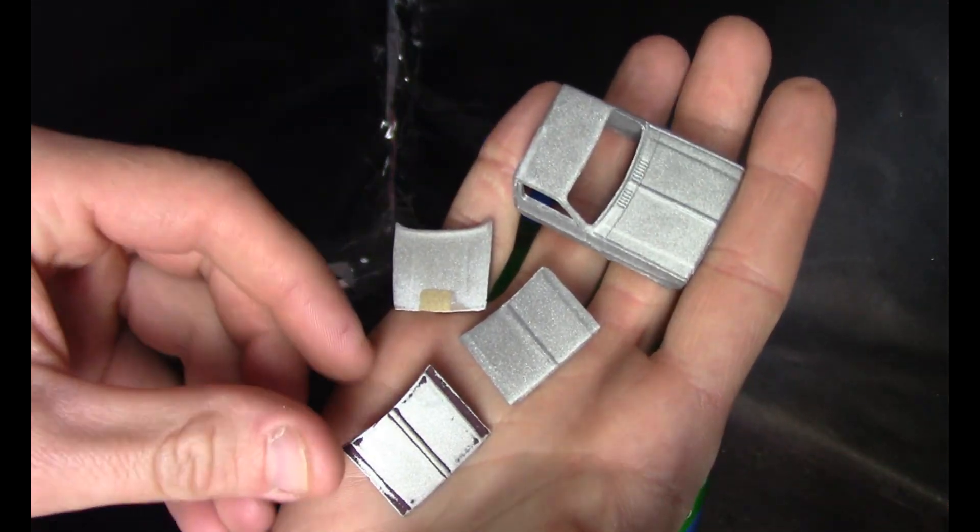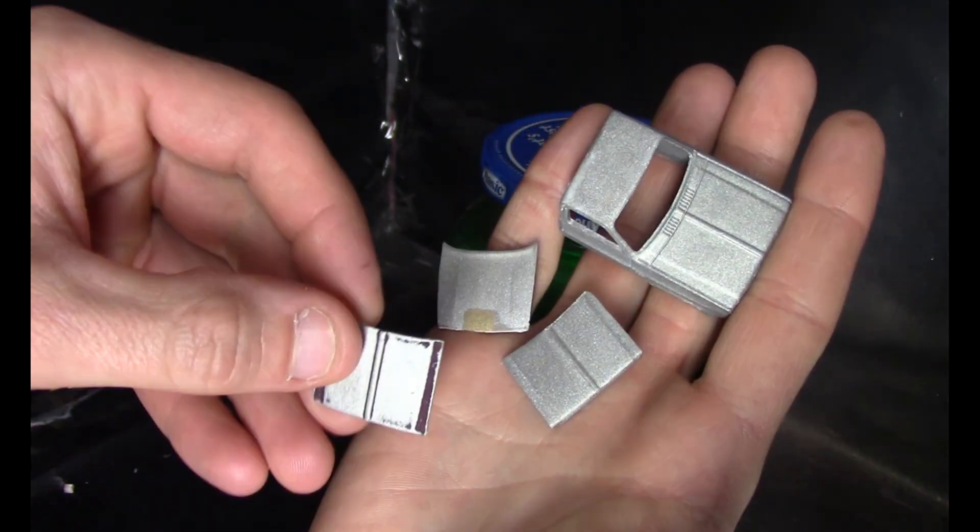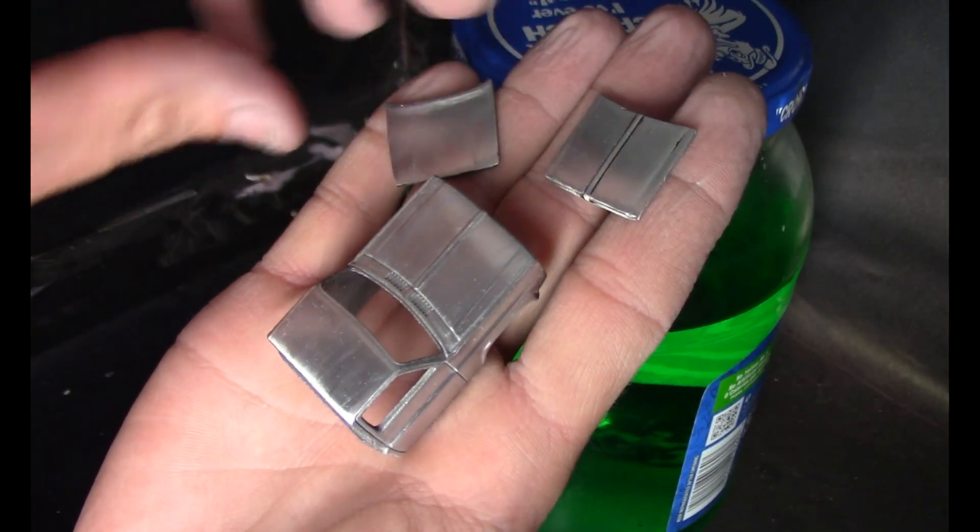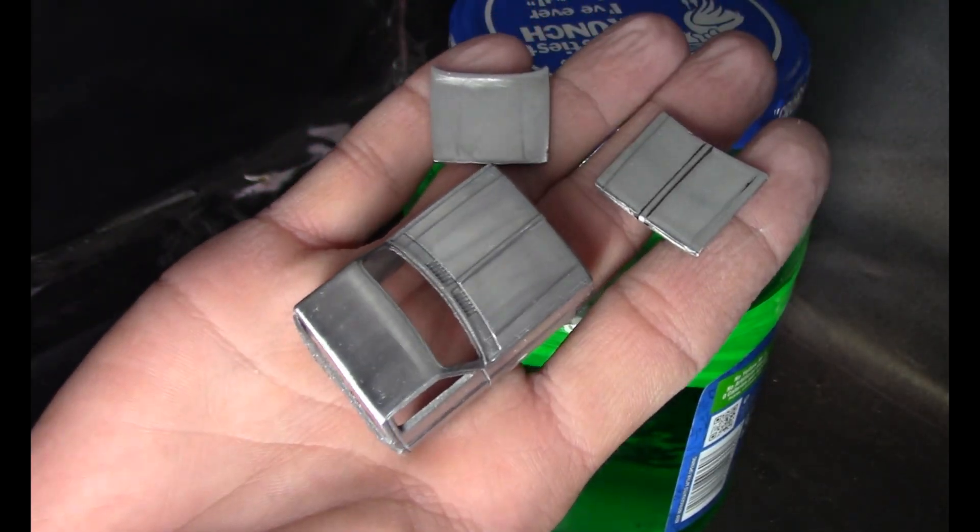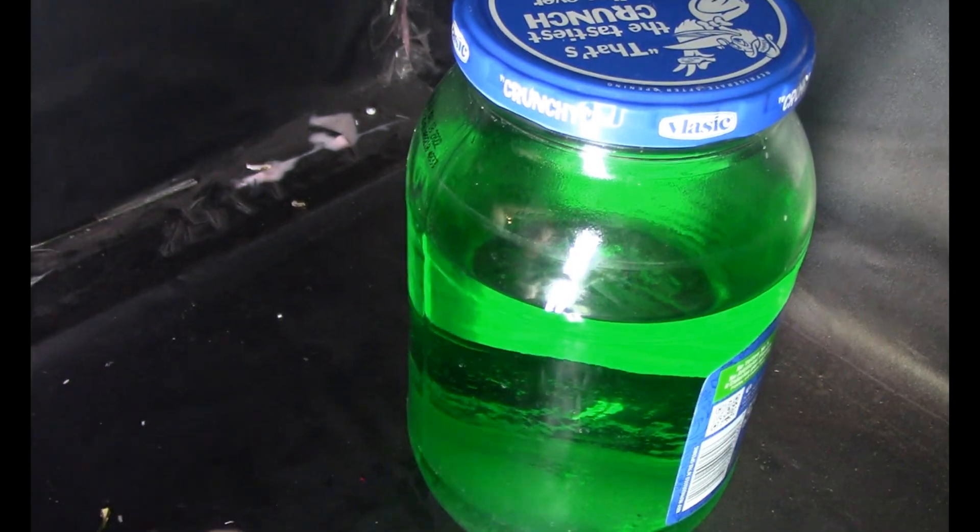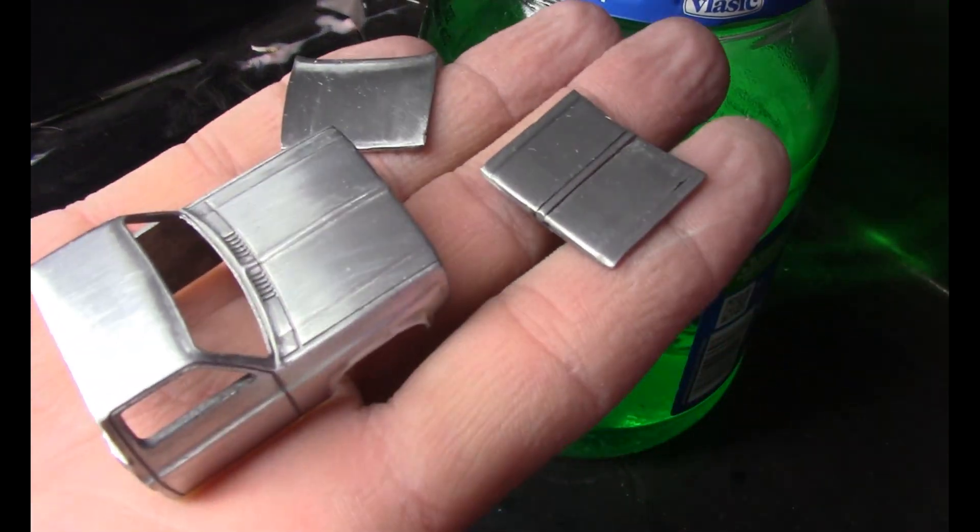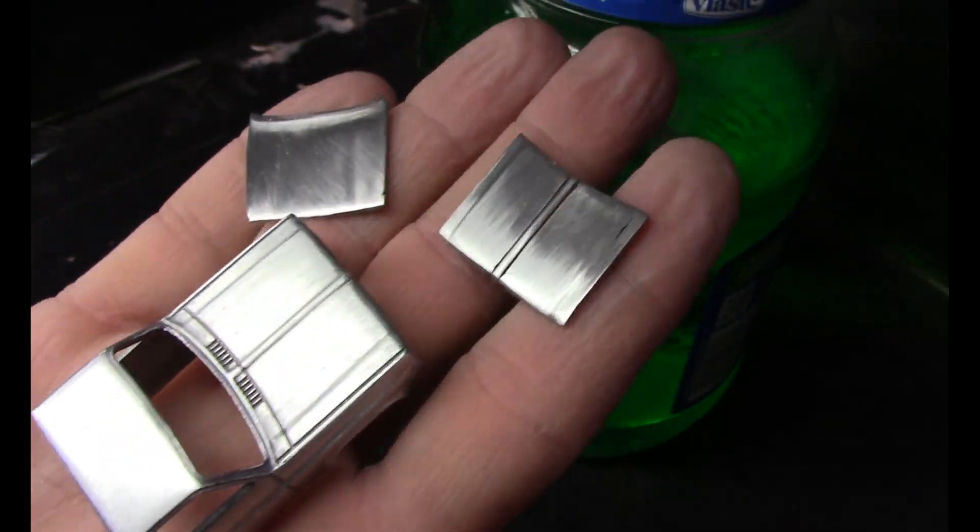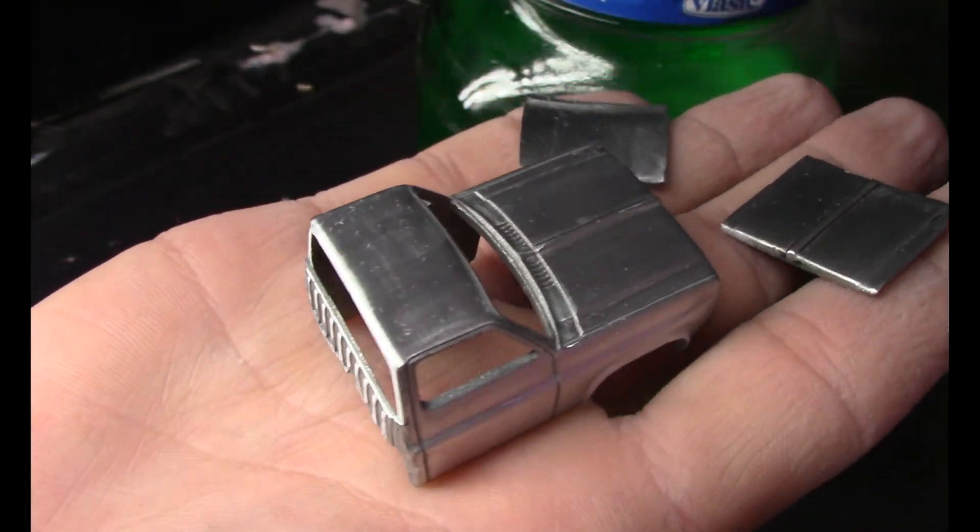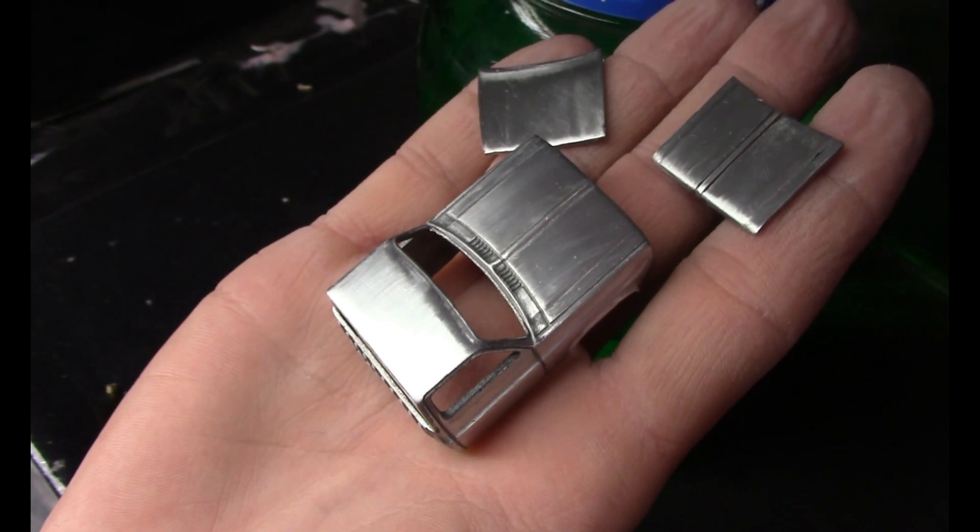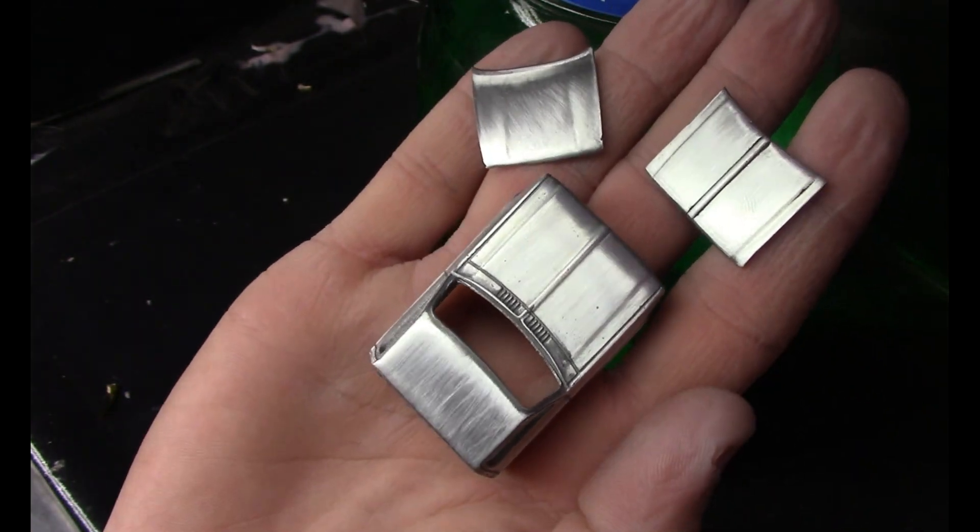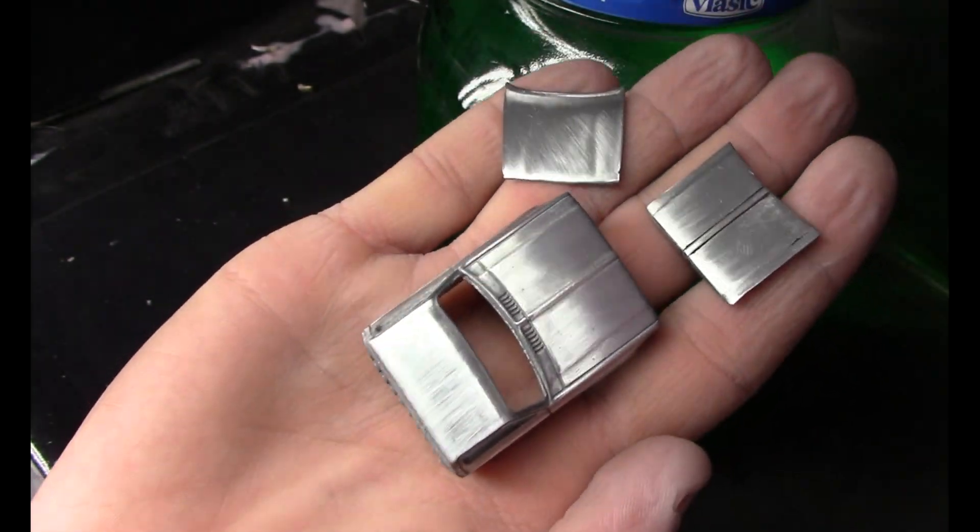After the sandblasting I went ahead and wire wheeled these. I only spent a few minutes on each piece just getting it to a nice even texture, followed by some 400 then 600 grit sandpaper. Here you can see what it looked like after I hit it with the 600 grit sandpaper.